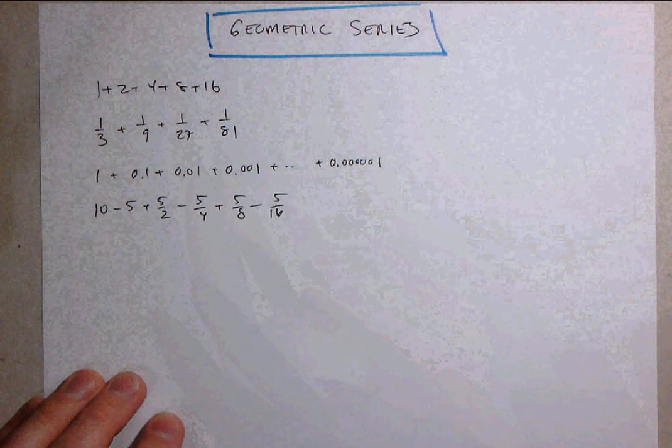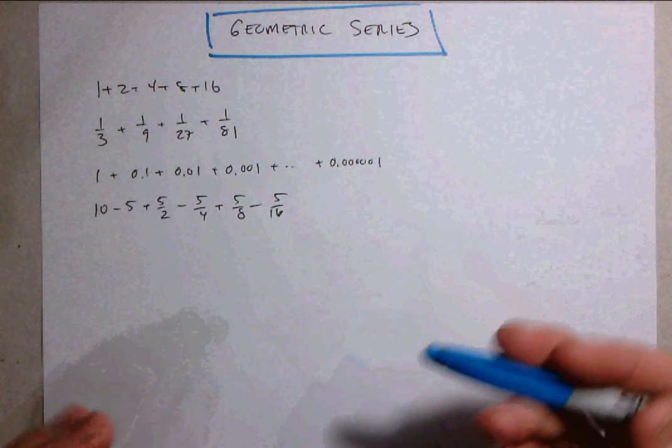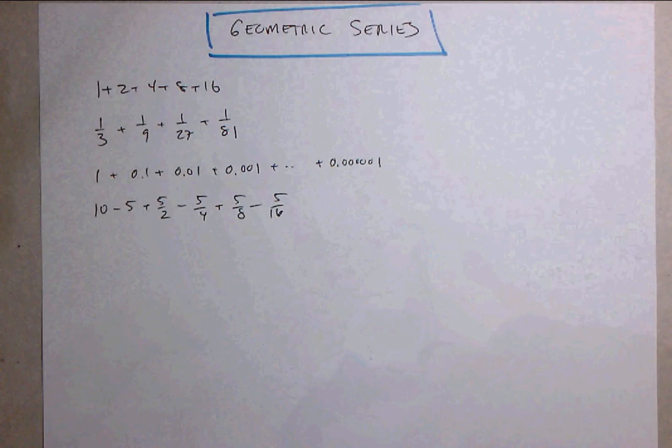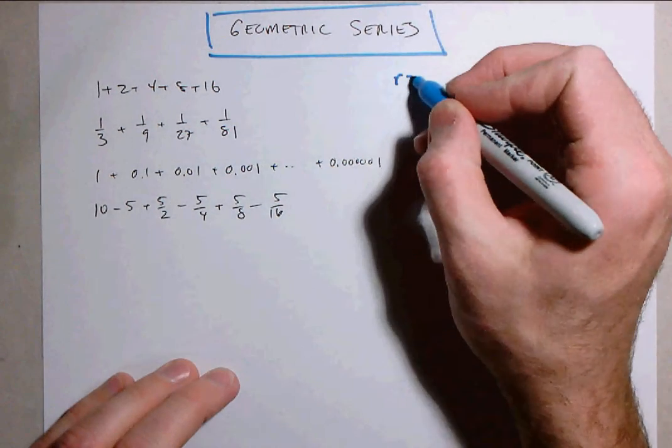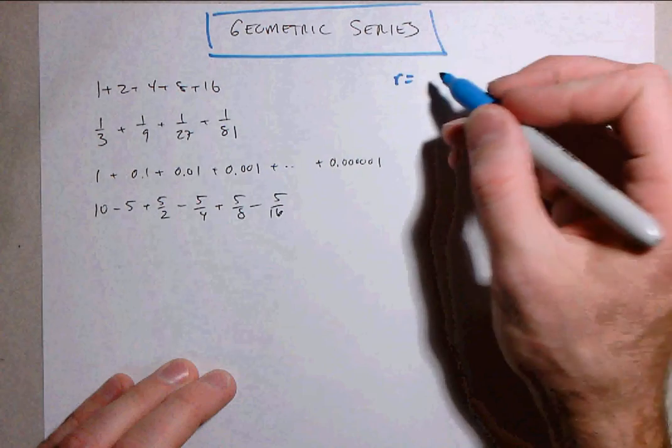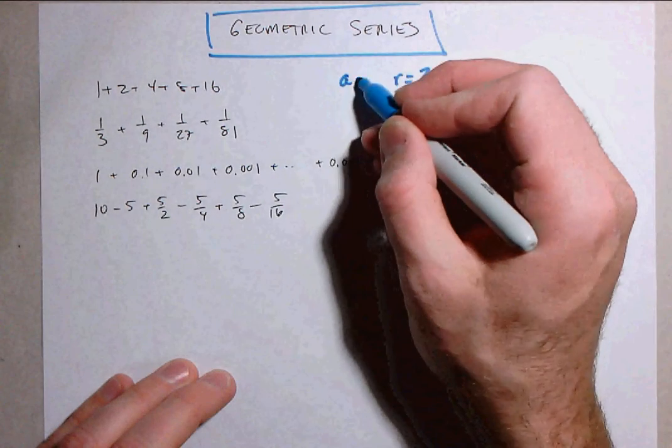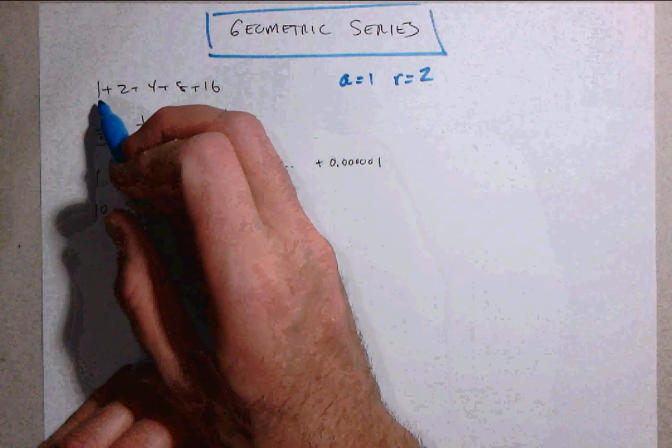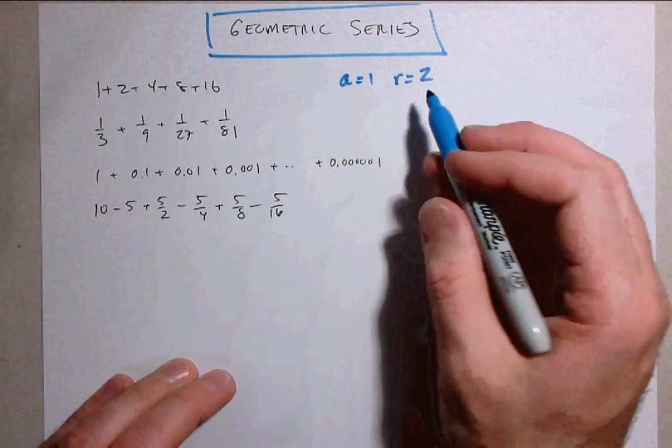Now when we encounter a geometric series generally the things we want to know about the series are of course its common ratio. So for this example the common ratio is 2 and we also want to know the first term. So the first term here is 1 and the common ratio is 2.